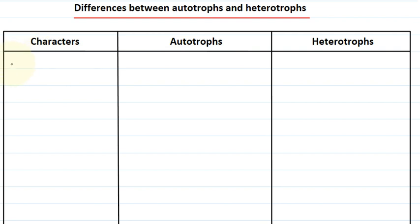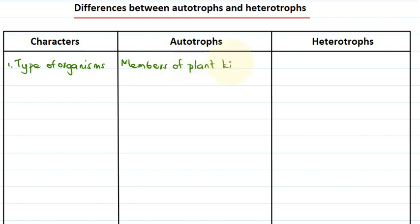So we will see the first character on which we can make a difference between autotrophs and heterotrophs. The first is the type of organisms. The type of organisms included under autotrophs are usually the members of the plant kingdom, and also certain unicellular organisms like cyanobacteria. Under heterotrophs, all the members are of the animal kingdom.